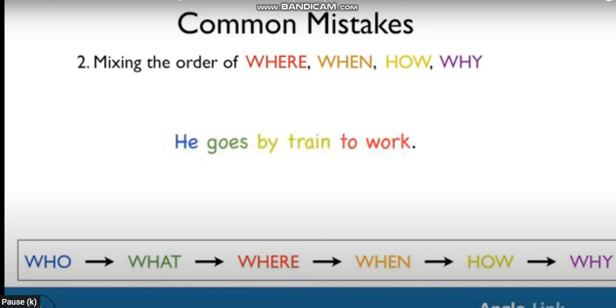Once again, the where and the how have been switched. The correct order is: he goes to work by train.